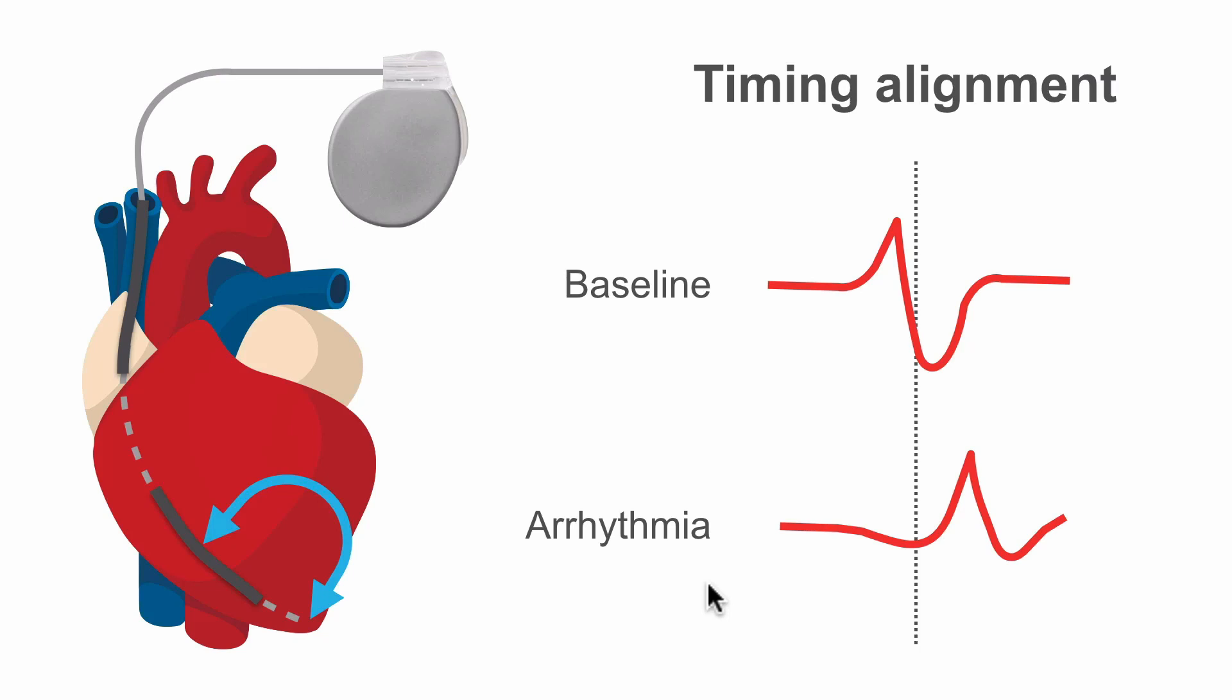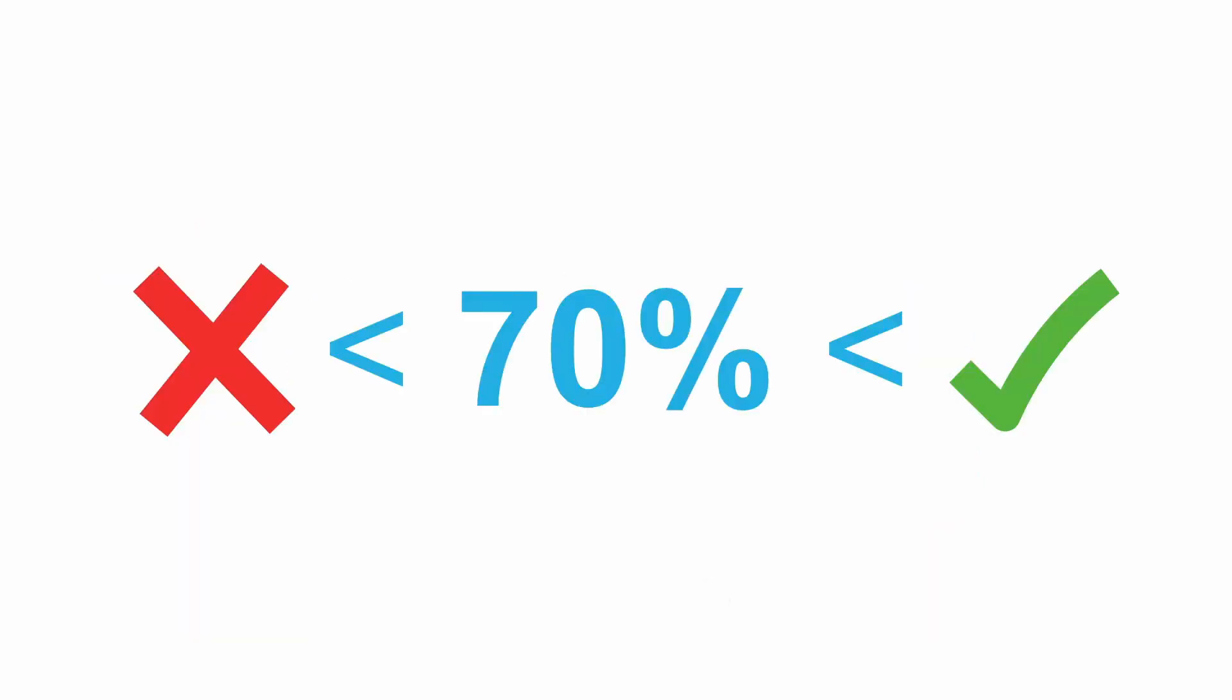Like most of these discriminators, we have a threshold, a cut-off point. This can be anywhere from 70% to as high as 90%, 95%, depending on the manufacturer and on the patient.